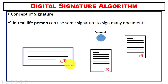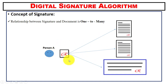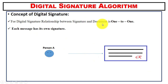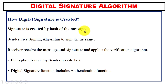In real life, a person can use the same signature to sign many documents — the relationship between a signature and documents is one-to-many. However, in digital signatures, you cannot use the same signature to sign more than one document. The relationship between a digital signature and a document is one-to-one: each message has its own unique signature.